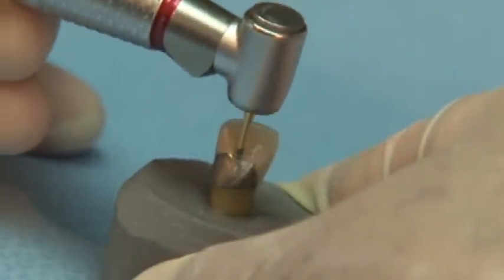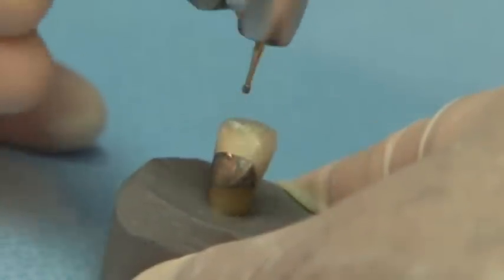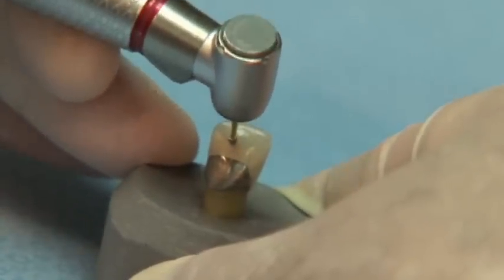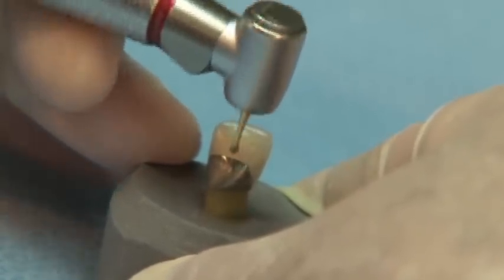It's easy to see why the Great White Burr is the number one burr in the world for cutting metal. Great White Burs will cut all of today's dental materials with precision and efficiency.